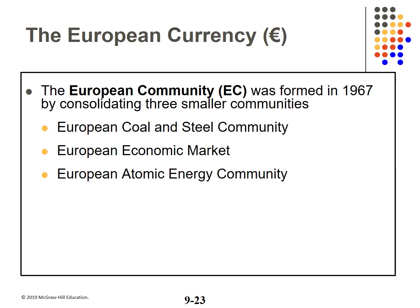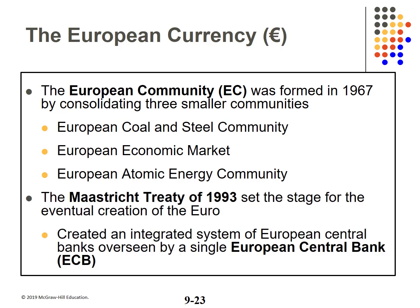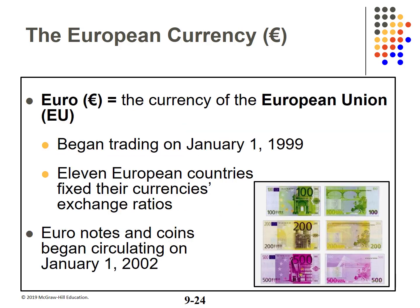A huge change in foreign exchange came with the introduction of the Euro. The European community was formed in 1967, combining three smaller communities. In 1993, the Maastricht Treaty started the change to the Euro, creating the European Central Bank to oversee the integrated system. Euro notes and coins began circulating on January 1, 2002. The EU has 27 members, but as of now, 19 have replaced their currency with the Euro: Austria, Finland, Portugal, Slovenia, Latvia, Luxembourg, France, Greece, Italy, Belgium, Estonia, the Netherlands, Slovakia, Spain, Lithuania, Malta, Germany, Ireland, and Cyprus.